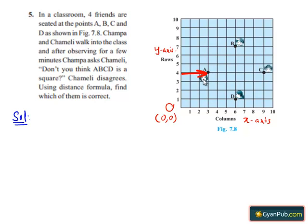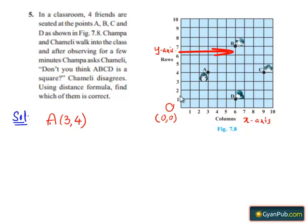Since point A is located at a distance of 3 units from the y-axis, the x-coordinate of point A will be 3. Also, point A is located at a distance of 4 units from the x-axis, so the y-coordinate of point A will be 4. Similarly, point B is located at a distance of 6 units from the y-axis, so the x-coordinate of point B will be 6, and point B is located at a distance of 7 units from the x-axis, so the y-coordinate of point B will be 7.